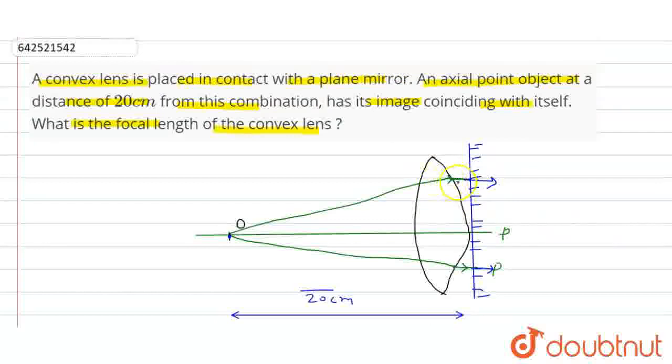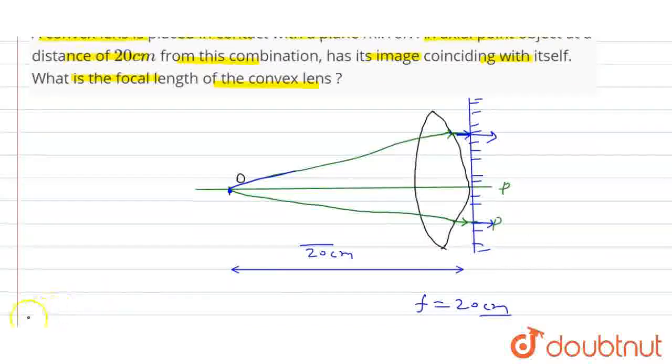After a ray is incident on this mirror, they will continue going backward like this, up to here. They will be parallel to the principal axis, and then they will go to this path to here, this object. So focal length will be how much? 20 cm. Thank you.